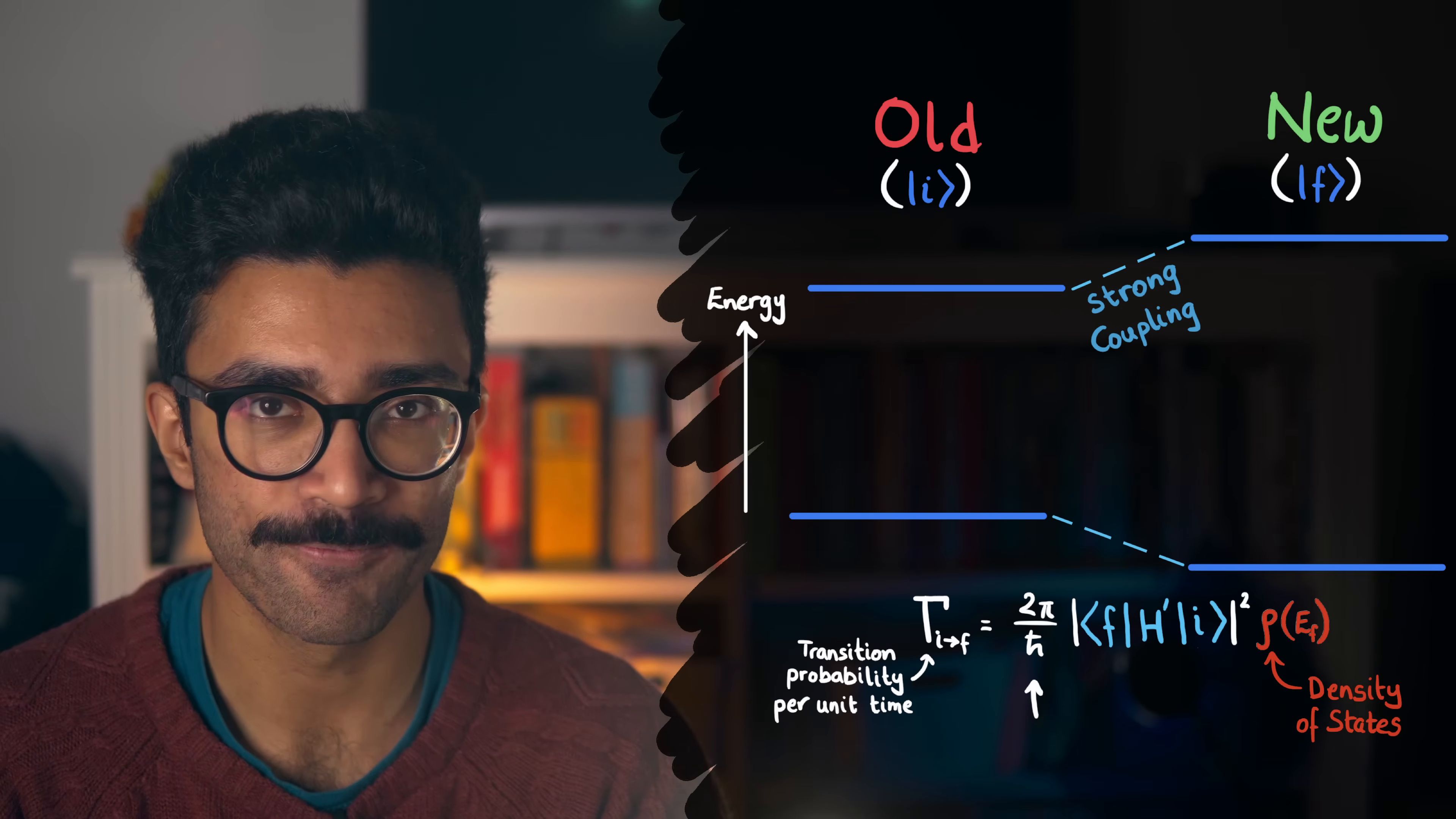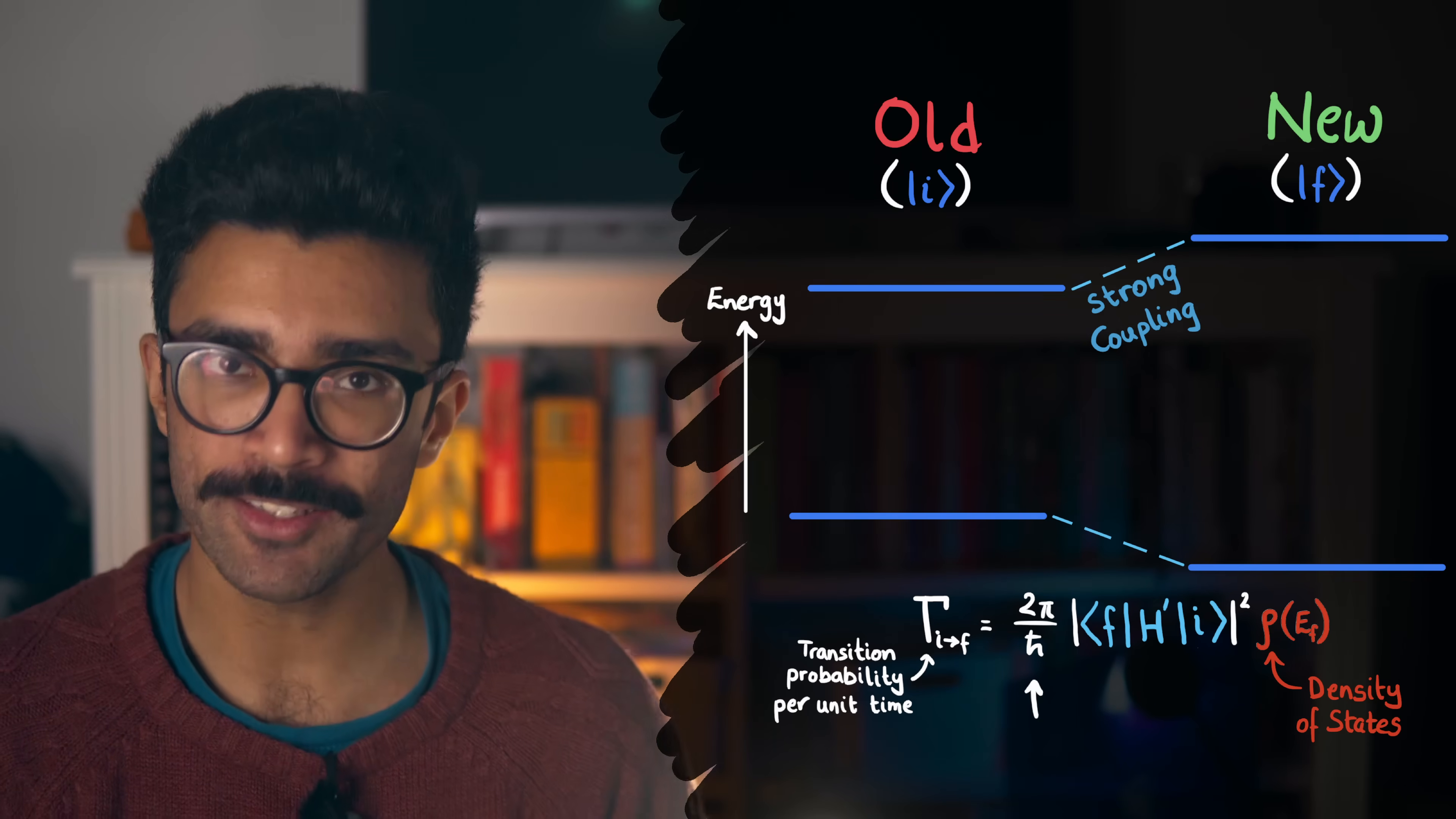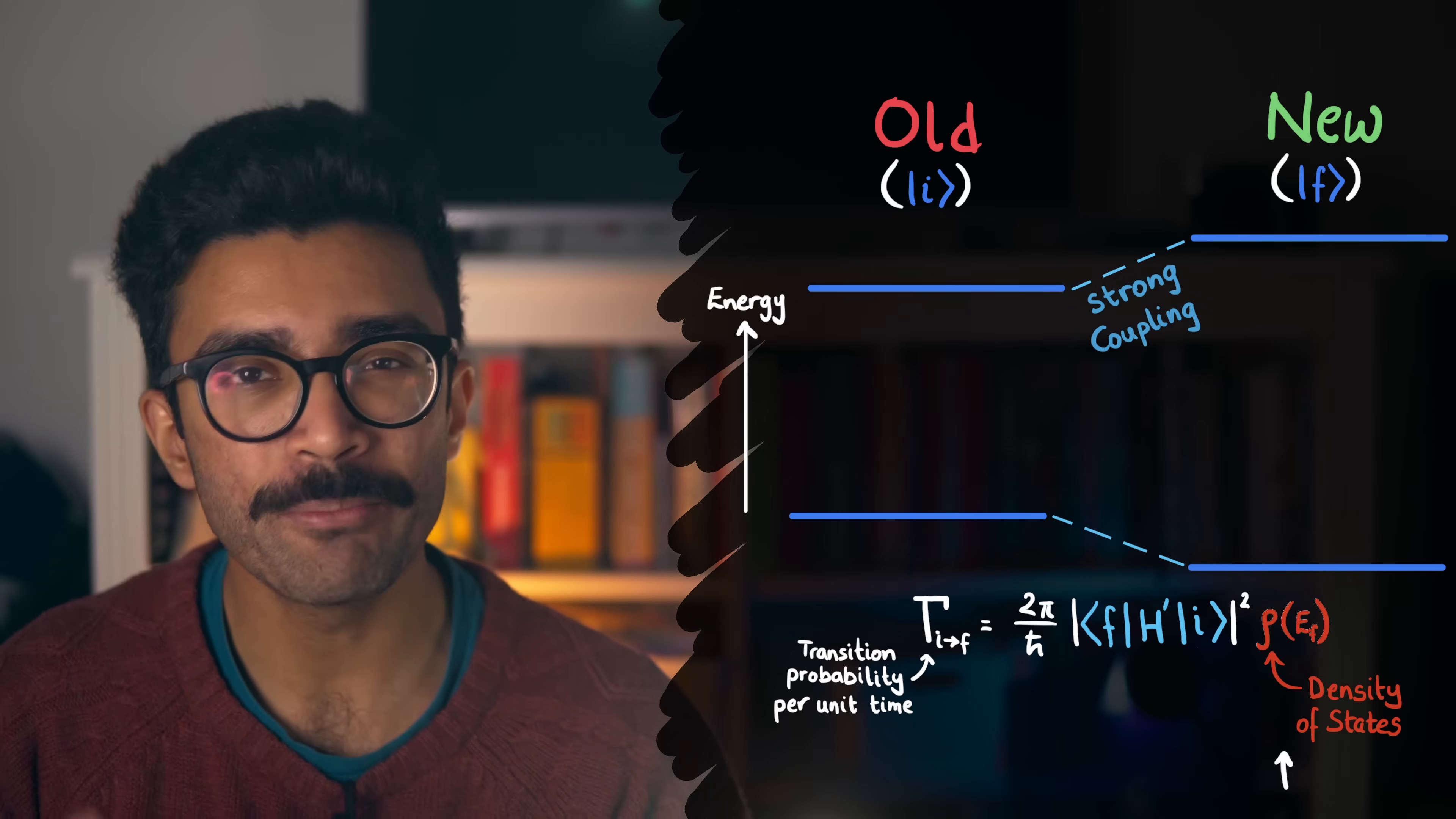So, in essence, Fermi's golden rule tells us that the probability per second, or per unit of time, that our electron is going to transition from its old state, I, to one of the new states, F, is given by this constant, multiplied by the square of the coupling between the old and the new states, via the modifying Hamiltonian, multiplied by the density of states around that new energy level.